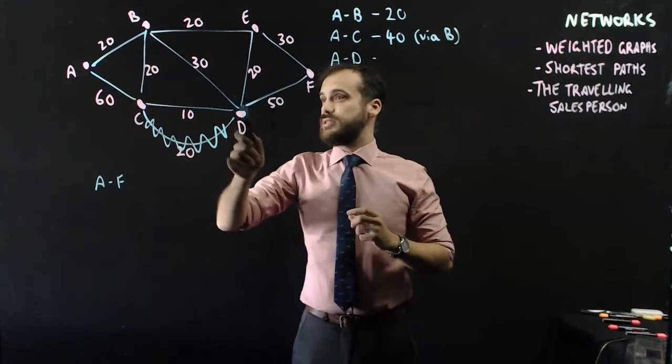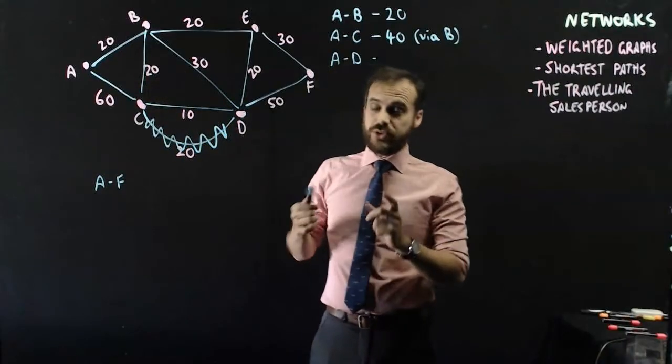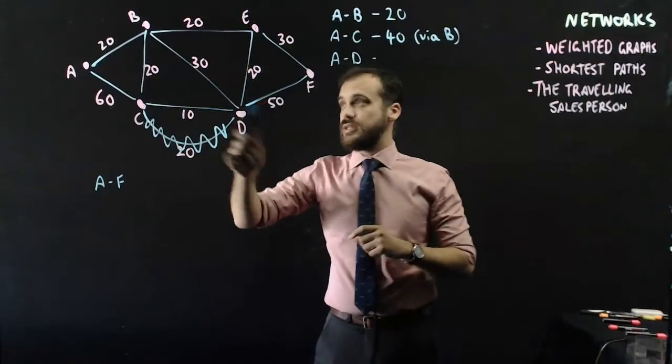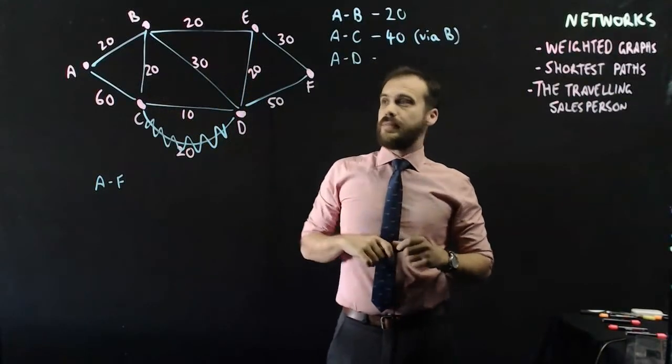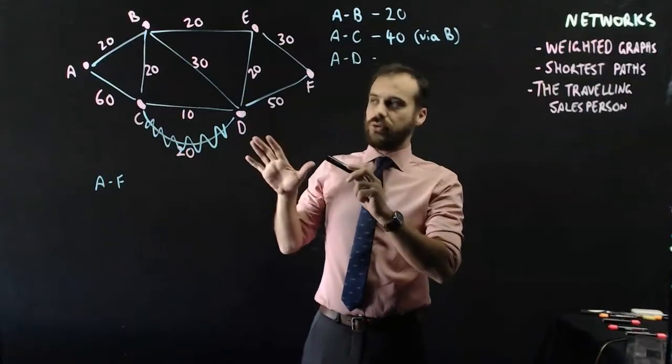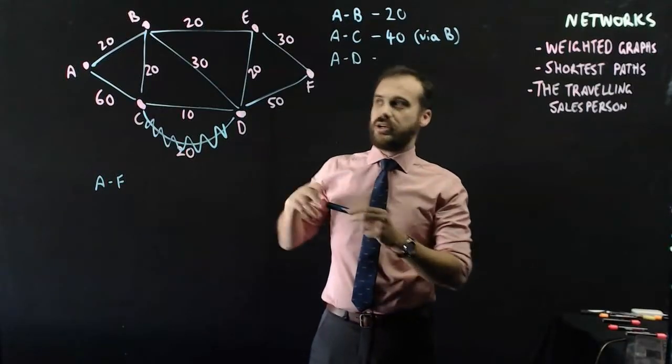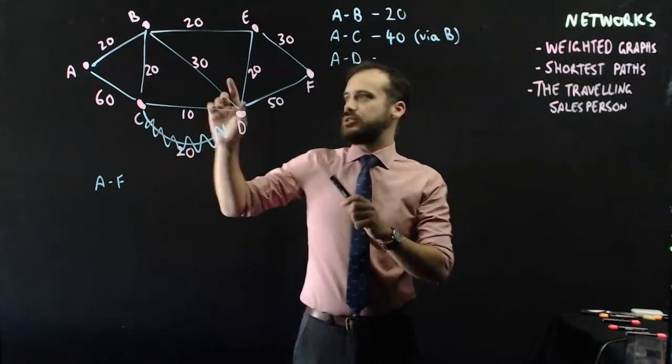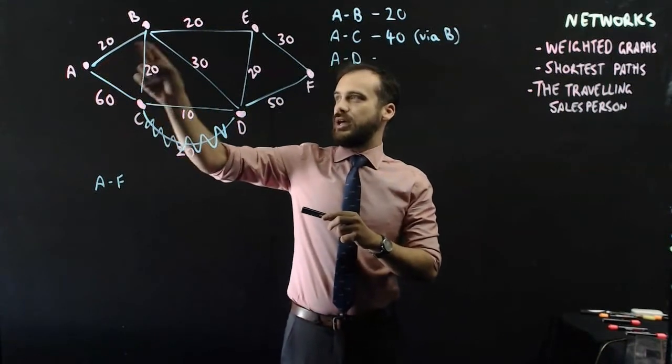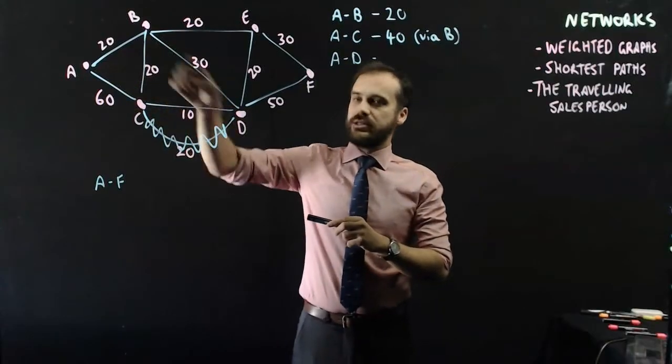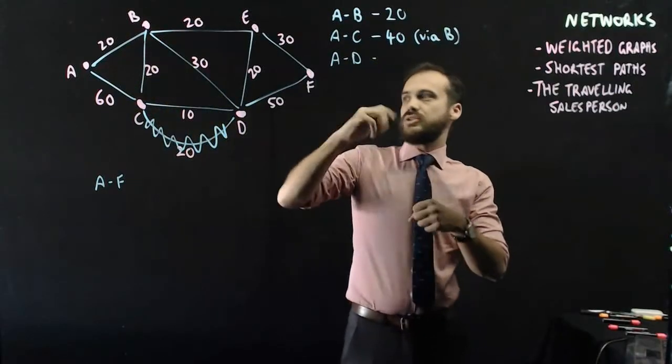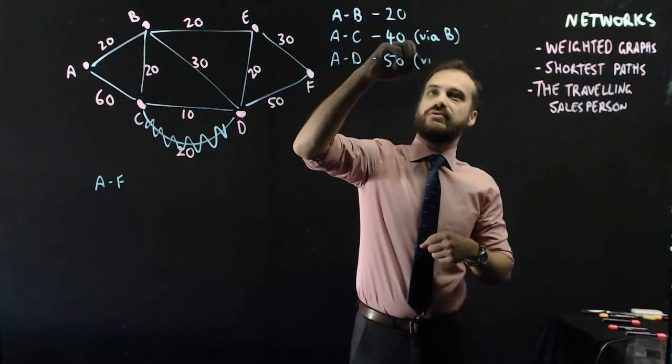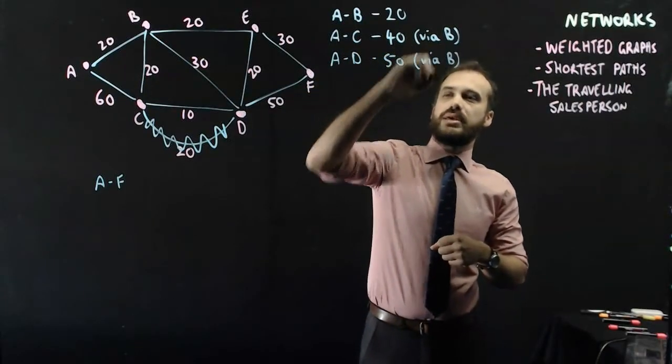You can go A to B to D, that's 20 plus 30, that's also 50. You can go A to B to E to D, that's 20 plus 20 plus 20, that's 60. That's all of the ones that I can find that are likely scenarios. Obviously, you can go like all the way around here, but that's going to be way too big. So, I'm going to choose A to B to D, because I'm only passing through a vertex here. So, I'm going to say 20 plus 30 is 50, and that's via B as well.